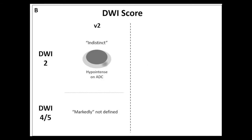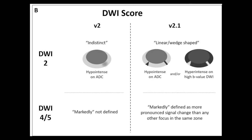In the PZ, the primary sequence for scoring is the DWI score. The biggest changes were as follows. In version 2, a score of 2 was described specifically as indistinct hypo-intense signal on ADC. In version 2.1, a DWI score of 2 was described specifically as either linear or wedge-shaped restriction in the PZ, designed to capture benign changes such as prostatitis.